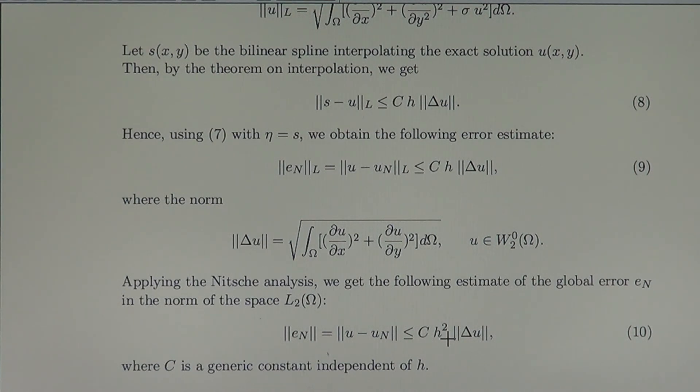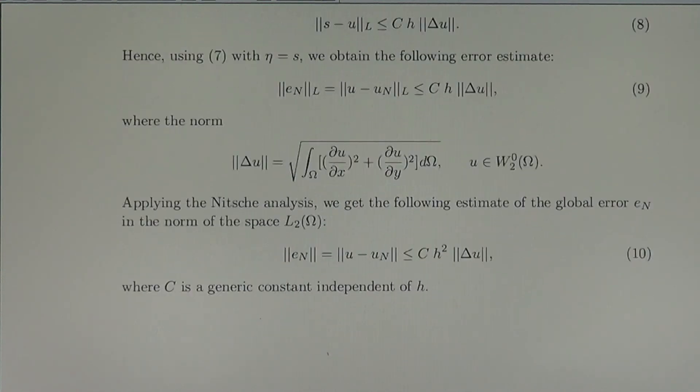So that error of the method we have used, finite elements method, is on the level O, capital O of H-square. It tends to zero as fast as H-square tends to zero, where C is a generic constant independent on H.